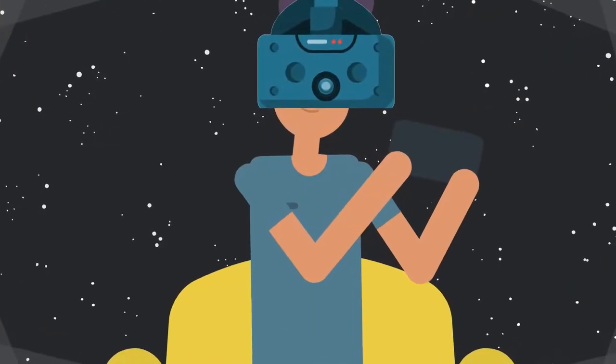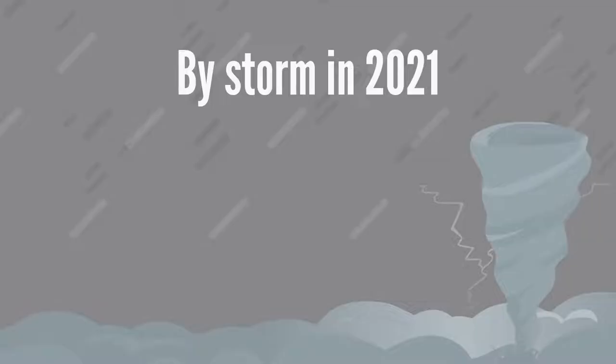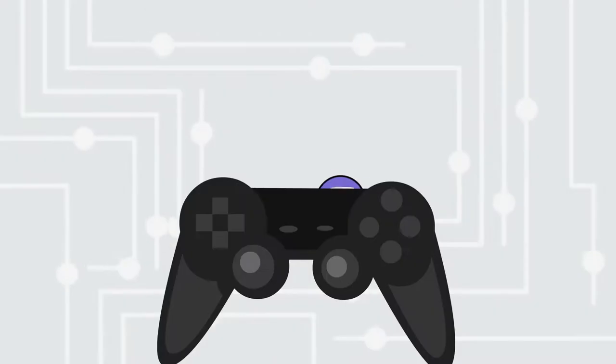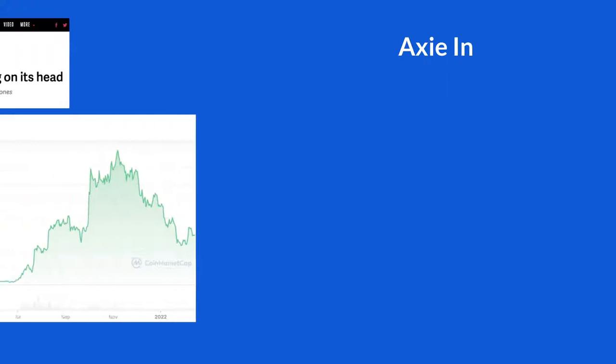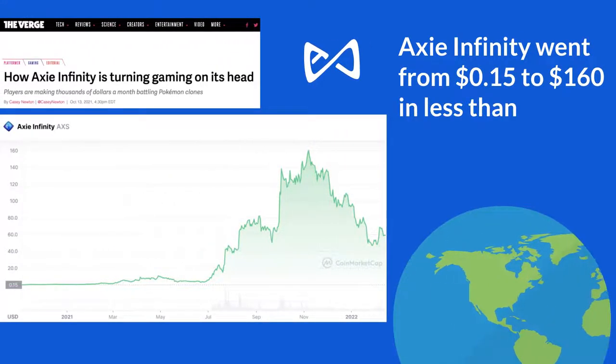Blockchain gaming has taken the cryptocurrency industry by storm in 2021. People can now get paid for playing games on the blockchain. Blockchain gaming tokens went absolutely crazy. Axie Infinity went from $0.15 to $160 in less than a year.